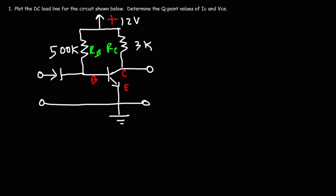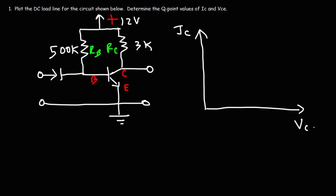The first thing we need to do is calculate the maximum saturation current. The DC load line is a line that shows the values of IC and VCE, with VCE on the x-axis and IC on the y-axis.